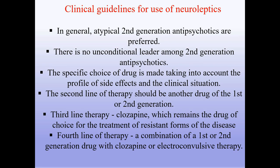Clinical guidelines for use of neuroleptics. In general, atypical second-generation antipsychotics are preferred. There is no unconditional leader among second-generation antipsychotics; the specific choice is made based on side effect profile and clinical situation. The second line is another first- or second-generation drug. Third line is clozapine, the drug of choice for resistant forms. Fourth line is a combination of first- or second-generation drug with clozapine or electroconvulsive therapy.